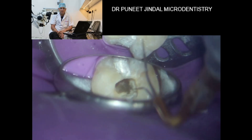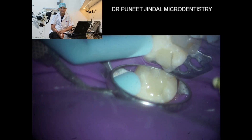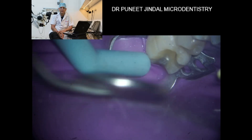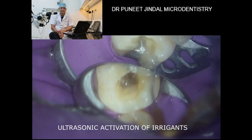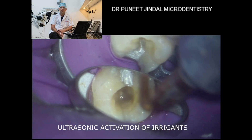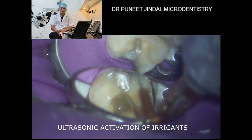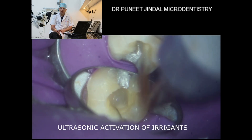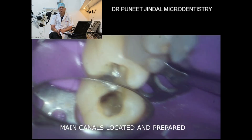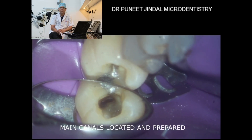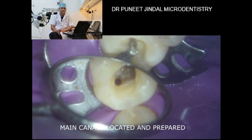Since this was a non-vital case, before placing the files we used a copious amount of irrigation — lots of hypochlorite — to disinfect the coronal portion of the pulp before reaching the chamber.